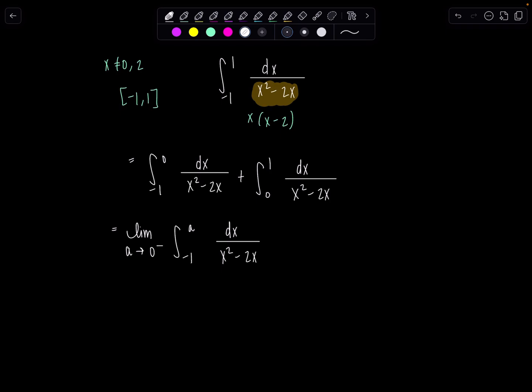And then the other one, let's use a different variable. We'll approach this time zero from the right and I'll use b, b to one. You could use whatever you want, t or something else.